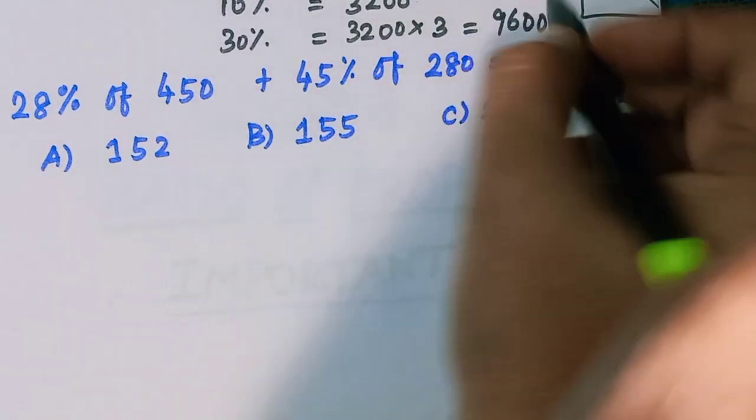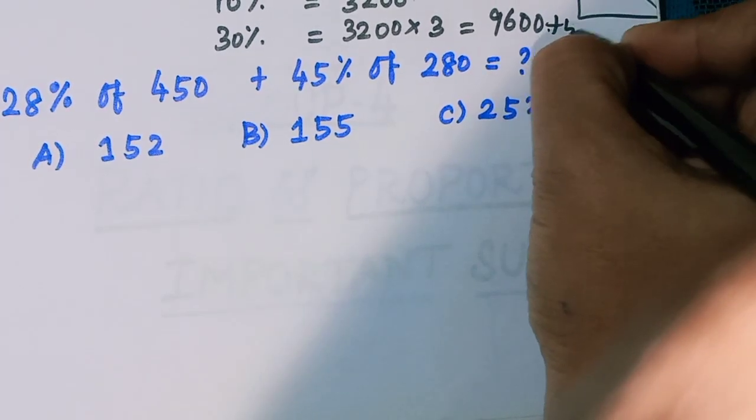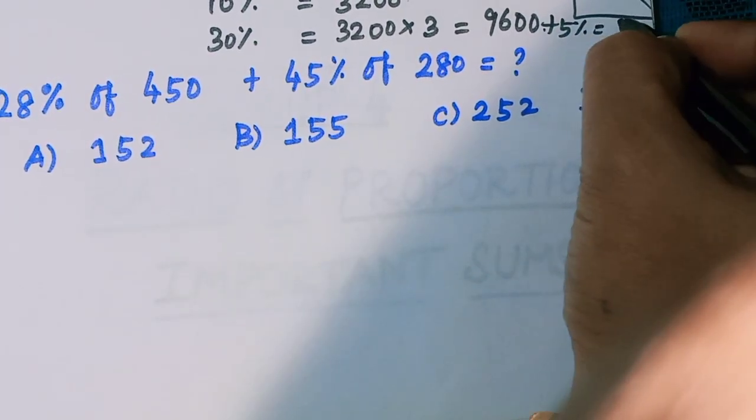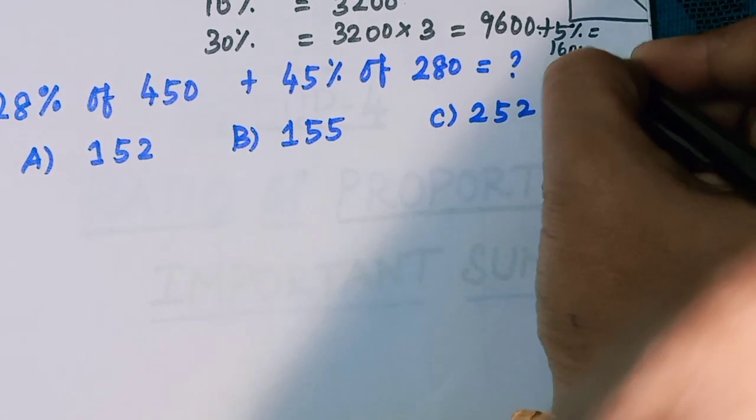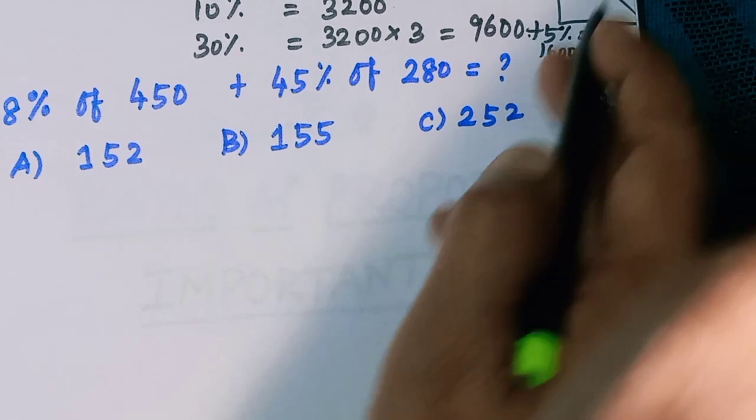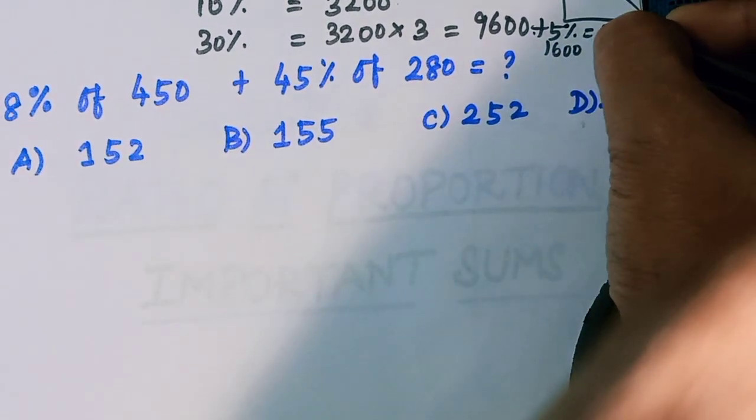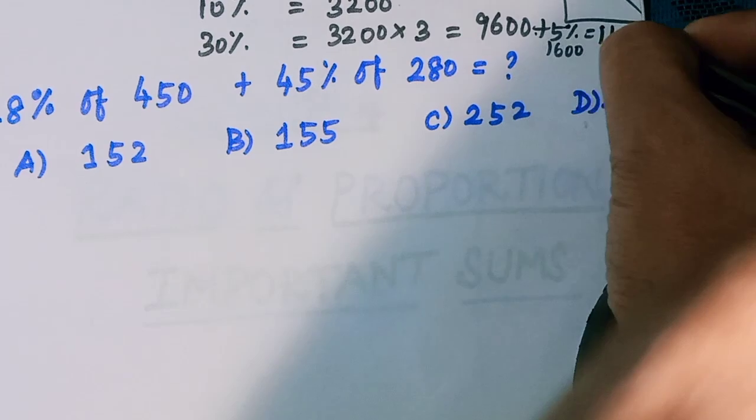Add 9,600 plus 5%, 5% is equal to 1,600. So 9,600 plus 1,600 equals 11,200.